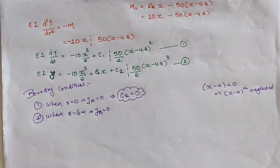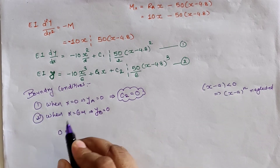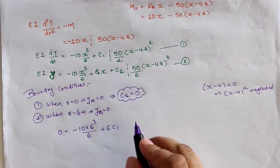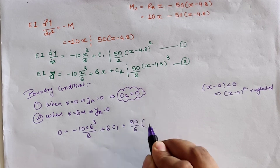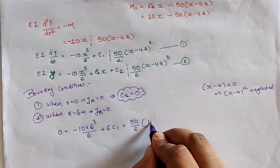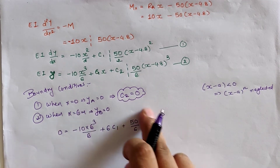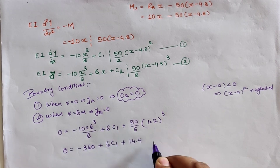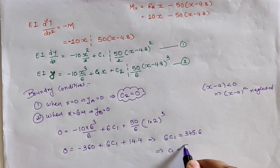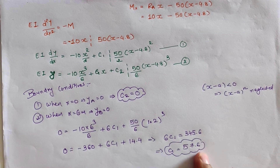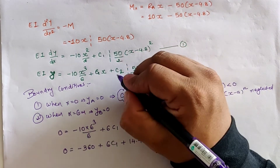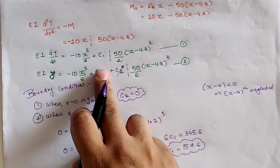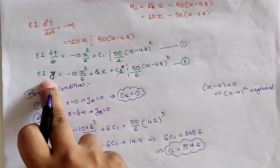Applying the second boundary condition (x = 6 m, y = 0): substituting into the deflection equation, with (6 − 4.8) = 1.2, and solving gives C1 = 57.6. With C2 = 0, we eliminate the C2 term. Substituting C1 = 57.6 into equations one and two gives the finalized slope and deflection equations.